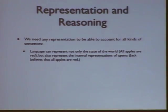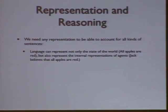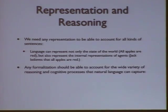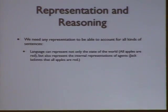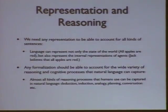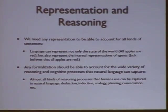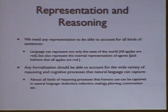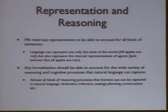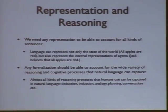We want to be able to account for sentences that do two key things. Number one, represent the state of the world — the extensional meaning describing all objects that satisfy a predicate like 'is apple.' And also internal representations of agents, so the beliefs I talked about — 'Jack believes that all apples are red.' We think a formalization should account for the wide variety of reasoning types we use: analogical, deductive, inductive, and all of that. Since all these reasoning processes can be described using natural language, our formalization should be able to capture those reasoning processes themselves.